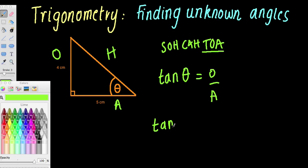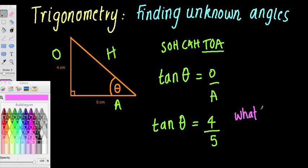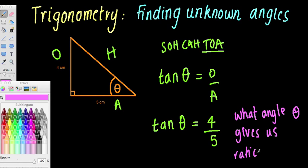Substituting the values I know, tan theta equals four over five. At this stage we can't really do anything using just our tan button on the calculator — that's not going to help us solve for this angle. What we're asking is: what value of theta will give us the ratio of four over five? What angle will give us that tan ratio? There is a way that we can do this.